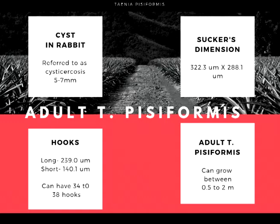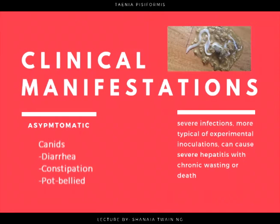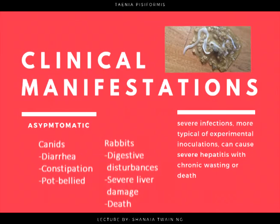Adult T. pisiformis can grow between 0.5 to 2 meters, or 20 to 79 inches, long. The clinical manifestations of T. pisiformis are usually asymptomatic. Canids can have diarrhea or constipation and might look pot-bellied, while rabbits have digestive disturbances and severe liver damage which can cause death.